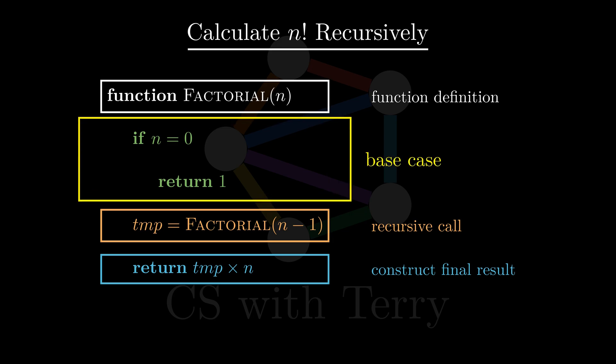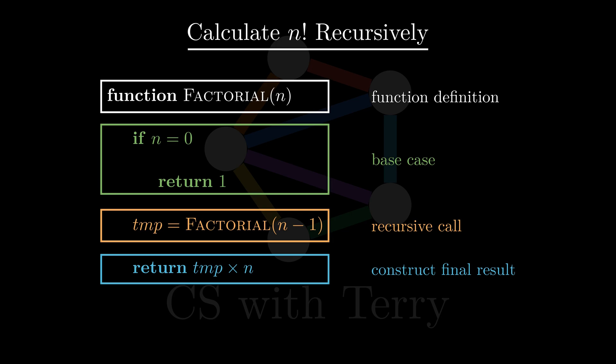In the stage of base case processing, we have to judge when the data size is small enough such that the result is obvious. Then we can directly hard-code the answer and return it. The purpose of base case processing is to make sure the recursion will not go on infinitely.